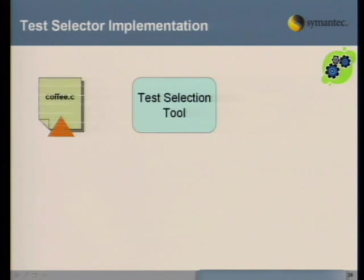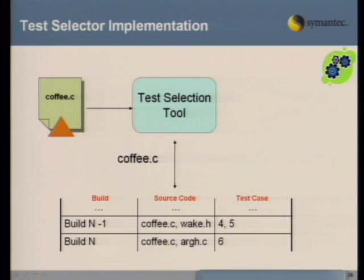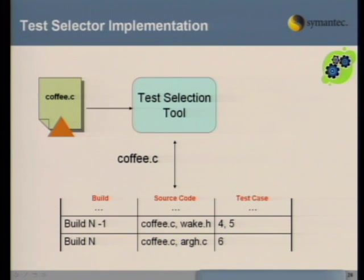When a source code change is checked in, you go down to the build history and ask: based on all N builds, with this piece of source code, how many times have test cases failed when this source code was checked in? If test cases 4, 5, and 6 have failed when this source has been checked in in the past, those are probably good tests to run this time around as well.